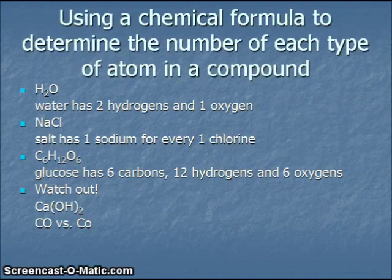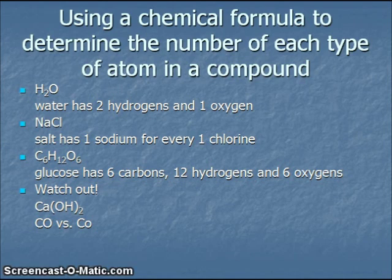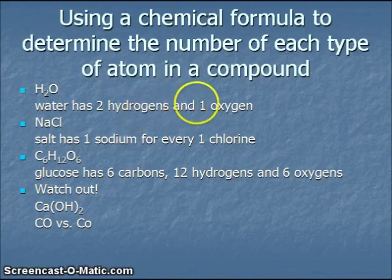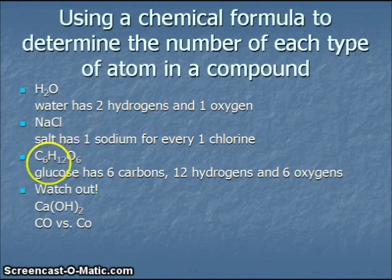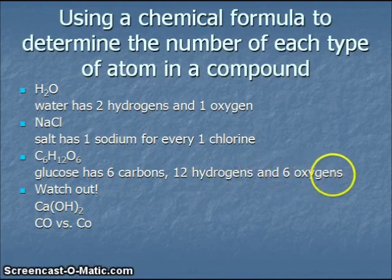A chemical formula can be used to determine the number and type of atoms which are found in a compound. For example, in a water molecule, H2O is the formula for water, we know that there are two hydrogen atoms and one oxygen atom present. In a formula unit of salt, sodium chloride, we know that for every one sodium ion, there is one chloride ion. In a molecule of glucose, we would find six carbon atoms, twelve hydrogen atoms, and six oxygen atoms.